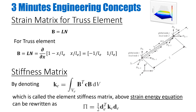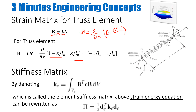My strain matrix B is given by L times N. In our case, the B matrix will be the partial derivative with respect to X of shape functions N1 and N2. My N matrix looks like this. So for truss elements, L times N will look something like this. I can replace N1 and N2 with the relationships already provided, and when I take the partial derivative with respect to X I get this type of relationship for B.